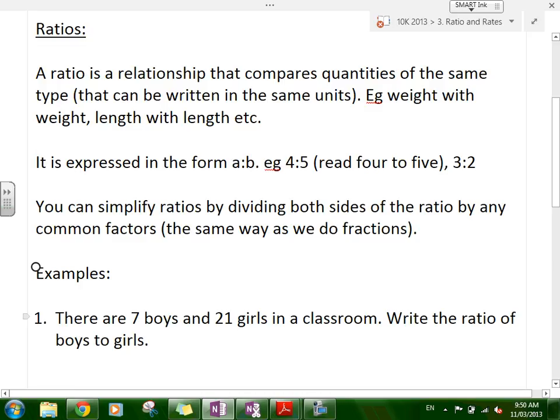We can also simplify ratios by dividing both sides by any common factors. So it's actually the same as fractions. Something over something, you can cancel out any common factors. That's the same with ratios. So if you have something like 10 to 5, you can divide both sides by 5 and go to 2 to 1.